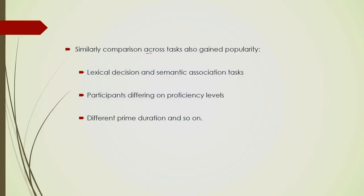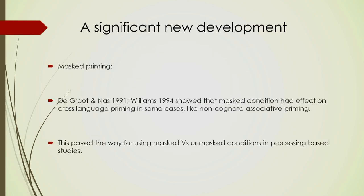There were also comparisons across tasks. Rather than sticking to only one kind of task, the same subjects and stimulus sets were used for different kinds of tasks — such as lexical decision task versus semantic association task — to find out where exactly differences and similarities lie. Participants differing on proficiency level was also an important variable. Prime duration and the gap between the stimulus and the target were also utilized, so myriad types of variables and parameters started getting incorporated into the research design.